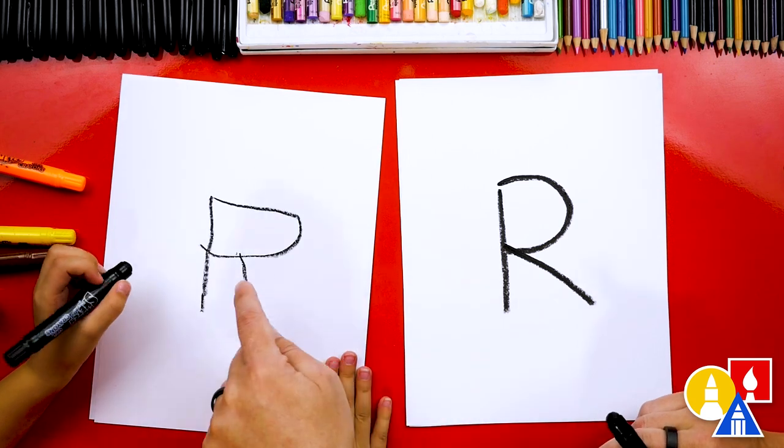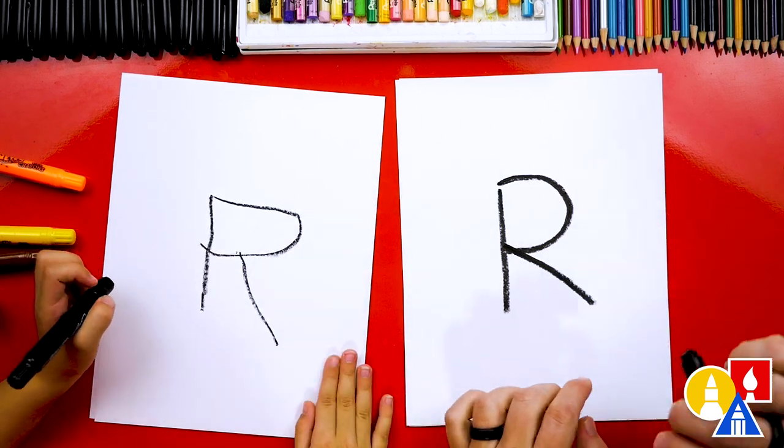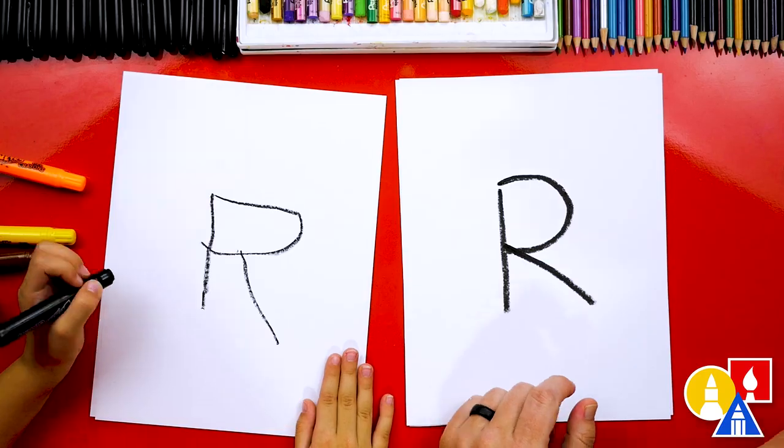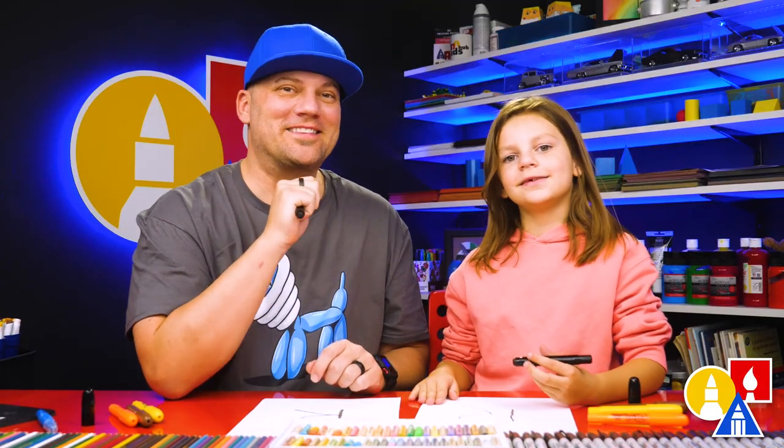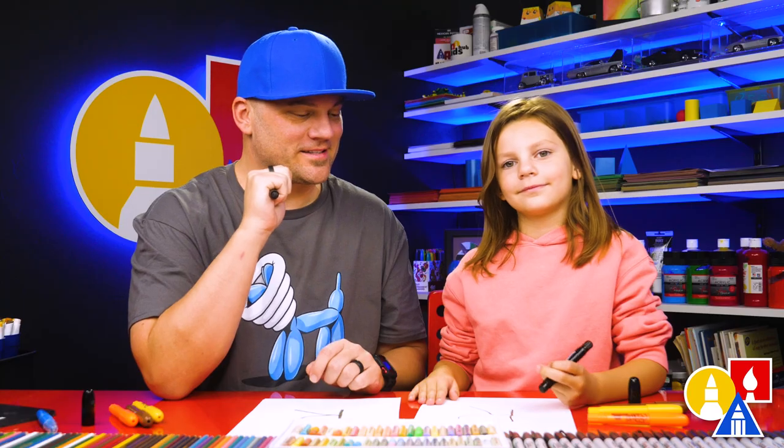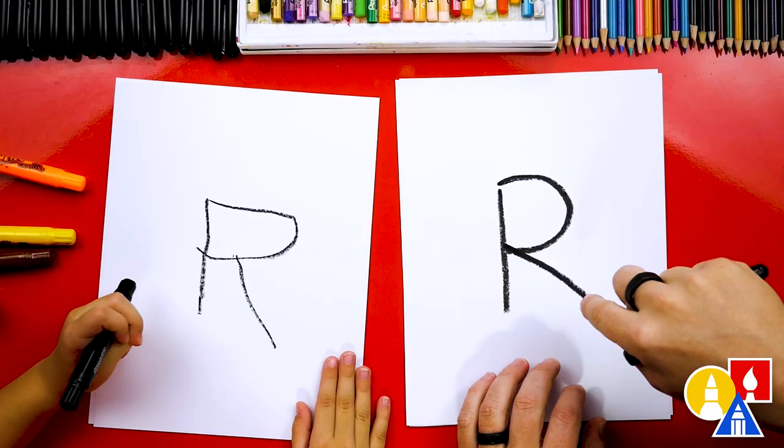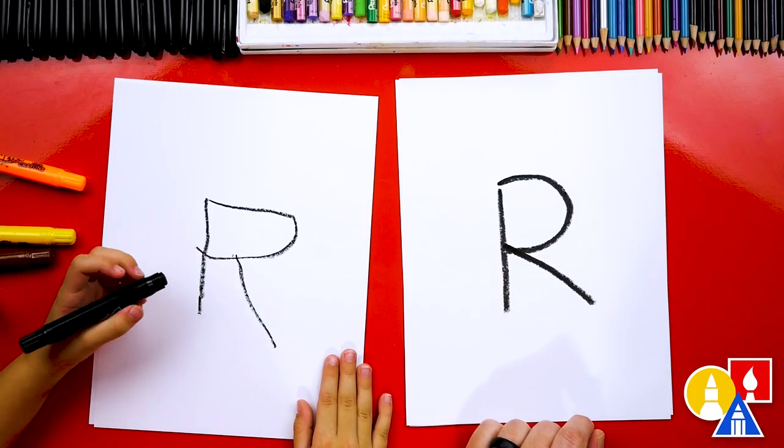We did it. And I love your letter R. It's okay that they don't look exactly the same. They both turned out awesome. That's because the most important thing is to have fun and practice. Remember to have fun and practice. All right. Let's keep going. Now we need to turn this into our bird, a robin.